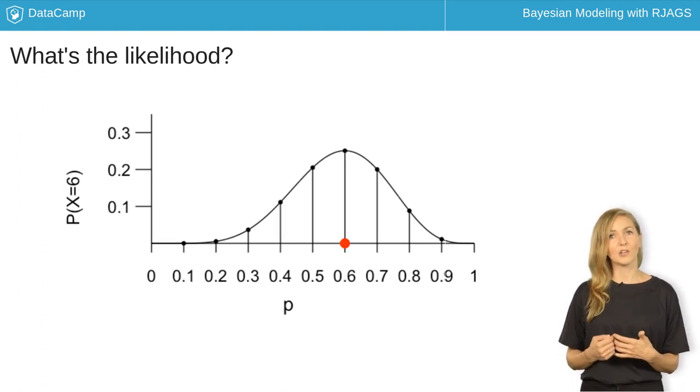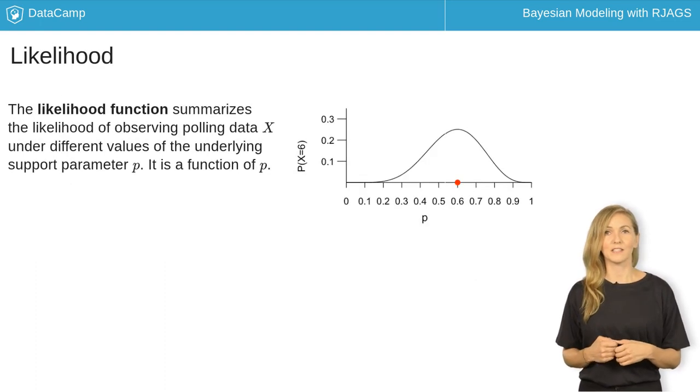Connecting the dots, the resulting curve represents the likelihood function. The likelihood function summarizes the likelihood of observing polling data x under different values of the underlying support parameter p.